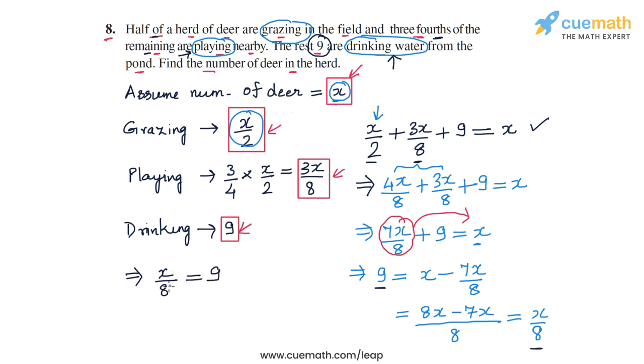Now all I need to do is cross multiply the 8 to the right side, which gives me x equals 9 times 8, or x equals 72.